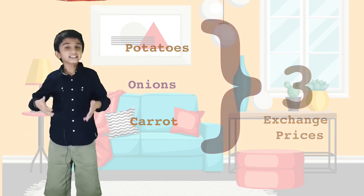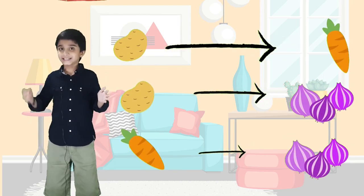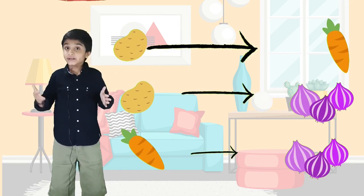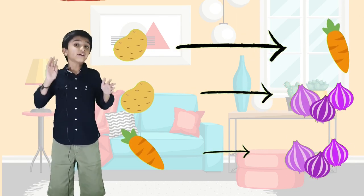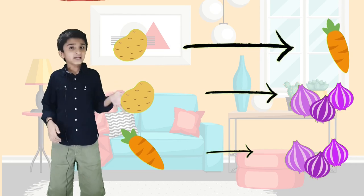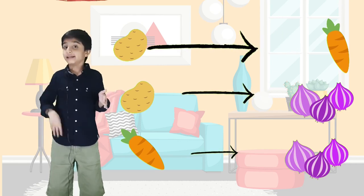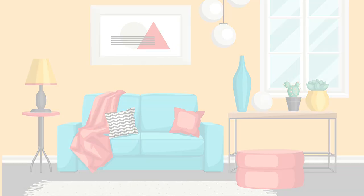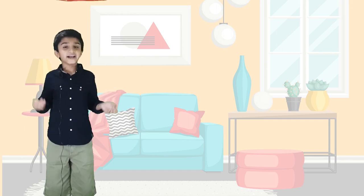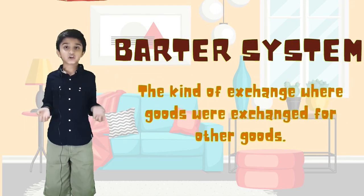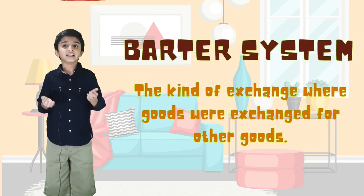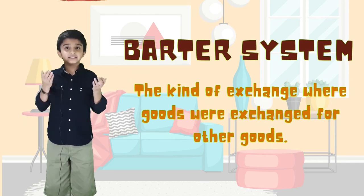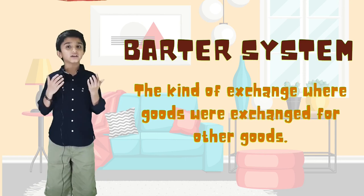The exchange prices were: one potato equivalent to one carrot, one potato equivalent to three onions, and one carrot equivalent to three onions. This kind of exchange was called a barter system, where goods were exchanged for other goods.